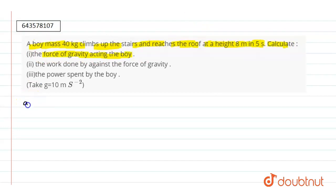So in the first part we have to find out the force of gravity. Force of gravity is mass into gravity. So the mass of the boy is 40 kg and the gravity is 10 meter per second square. So the force comes out to be 400 newtons.